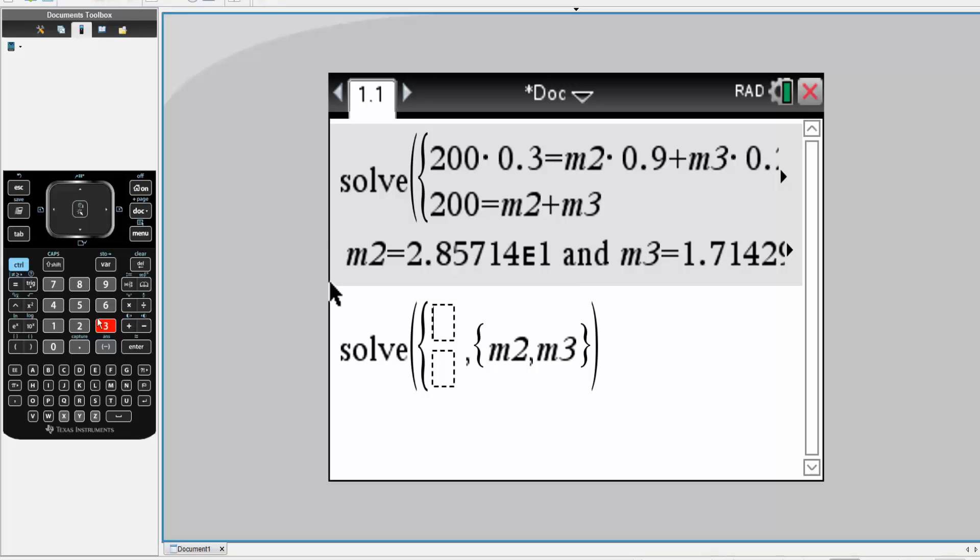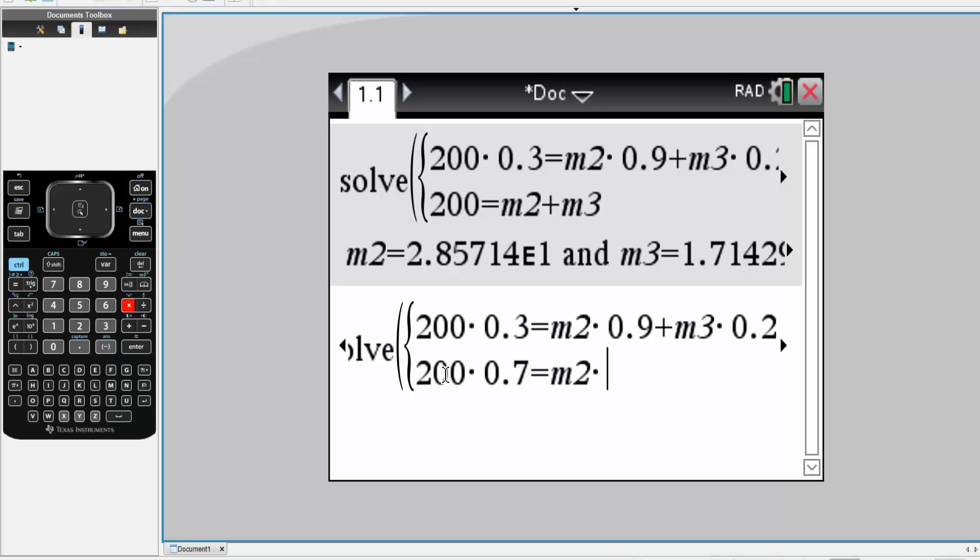We write the exact same thing. We have 200 times 0.3 is equal to M2 times 0.9 plus M3 times 0.2 for the first equation. And our second equation was 200 times 0.7 is equal to M2 times 0.1 plus M3 times 0.8.